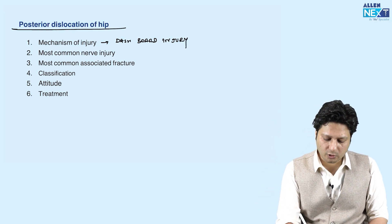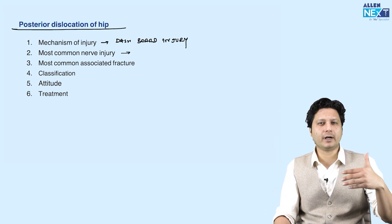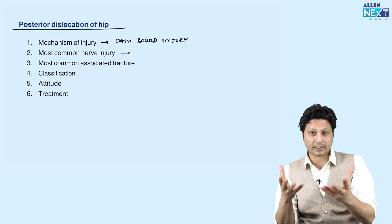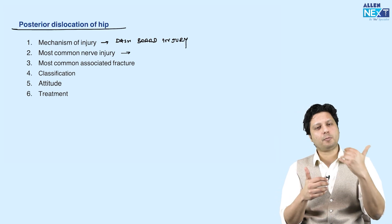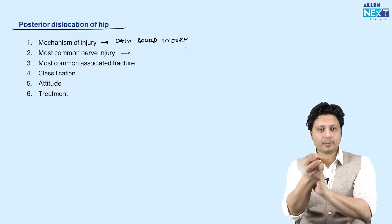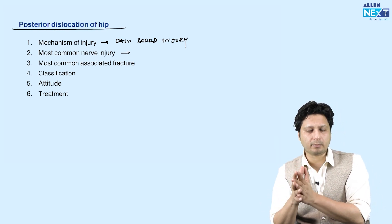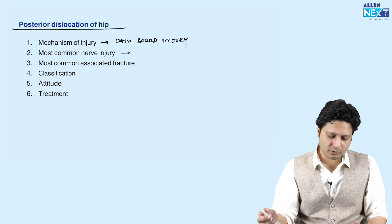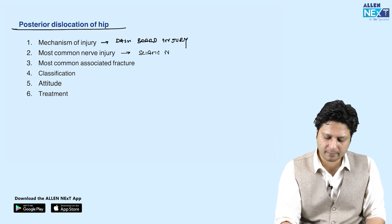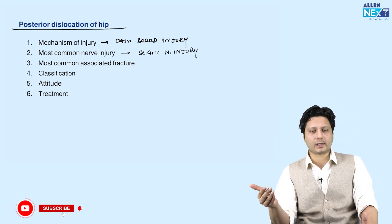The most common nerve injury associated with posterior dislocation is the sciatic nerve injury. The sciatic nerve, the largest peripheral nerve of the human body, lies just posterior to the hip joint. If there is a dislocation of the hip, there is always a possibility that this nerve might get impinged.